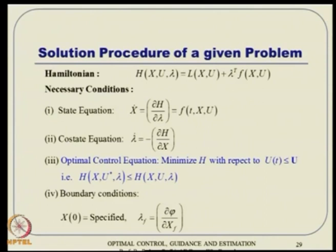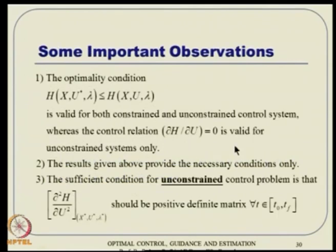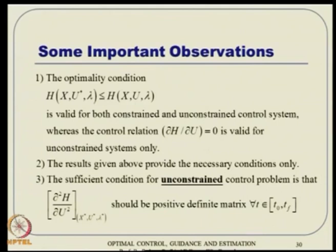In conclusions: physical systems are always restricted by constraints on both control and state variables. In this class we studied a brief summary of unconstrained optimal control to recapitulate earlier ideas, then derived Pontryagin's minimum principle through an intuitive argument. The key difference from unconstrained problems is that instead of setting del H by del u equal to zero, we minimize the Hamiltonian within the available constraint space.